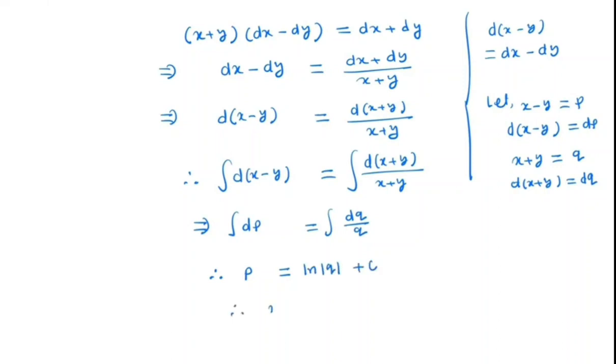So what is p? p is x minus y. And what is q? q is x plus y. So the general solution is: x minus y equals ln(x plus y) plus c.